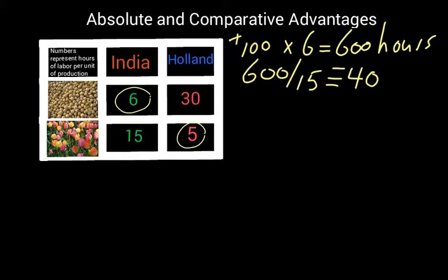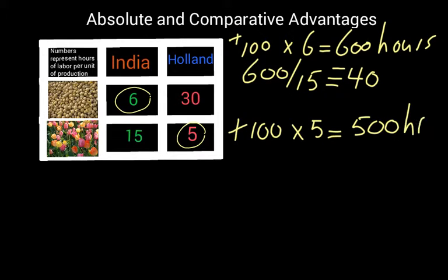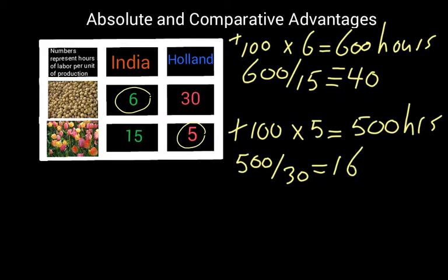Holland is specializing in tulips, so we're going to have them add 100 cases of tulips to their production. It costs them five hours to make each case, so it's going to cost them an extra 500 hours for the tulips. They're going to have to give up the production of soybeans. It had cost them 30 hours per bushel of soybeans, so they're going to have to give up 16 and two-thirds bushels of soybeans.